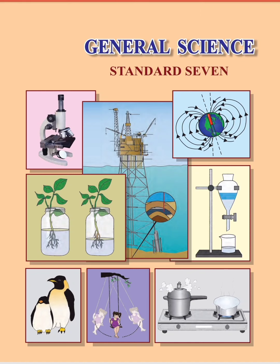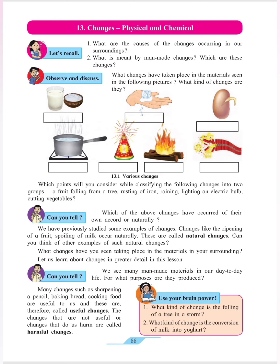Let's start this new lesson: Changes — Physical and Chemical, from textbook page number 88. We will first discuss some examples and pictures from the textbook. The first example is one glass kept beside a bowl containing powder, or you can say sugar. In the glass there is milk. What will happen if you add the sugar into the milk?